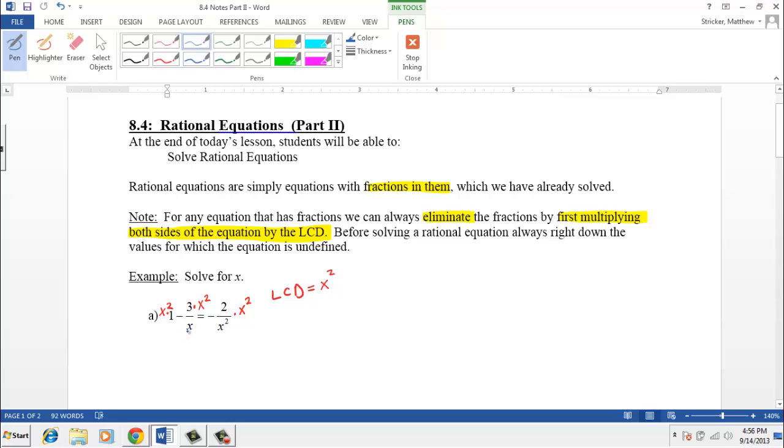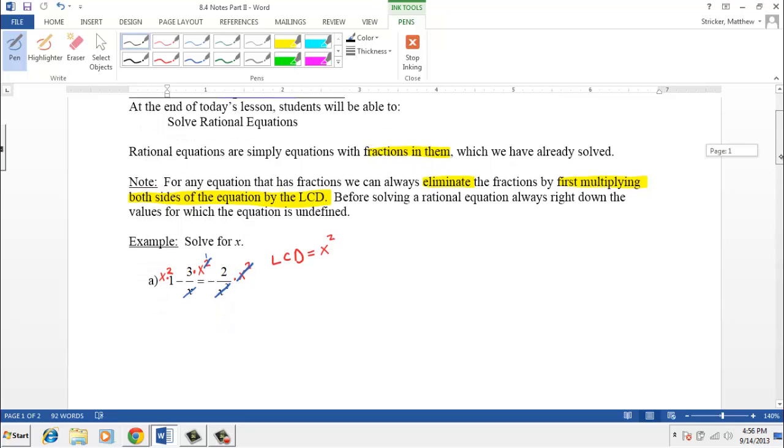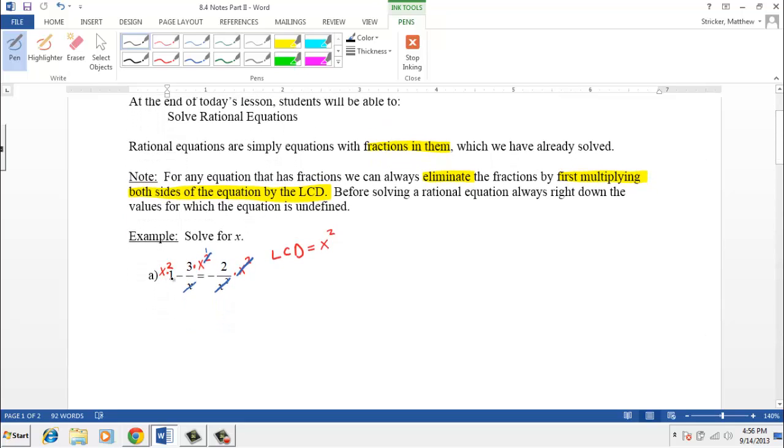And so when x goes into x squared, that leaves one x. And then over here the x squareds cancel, and our equation gets a whole lot simpler. We end up with x squared times one in the first term, which is x squared. Then we have a minus three times x. Remember one of these x's canceled, so we have three times x. And then on the other side of the equation, both x squareds canceled, and we just have a negative two.